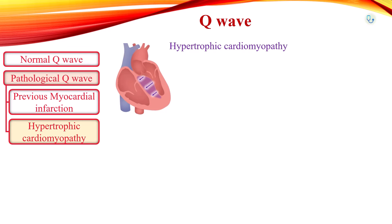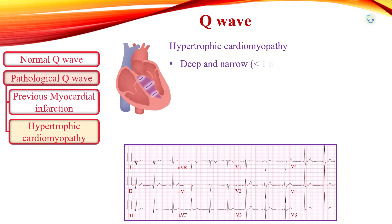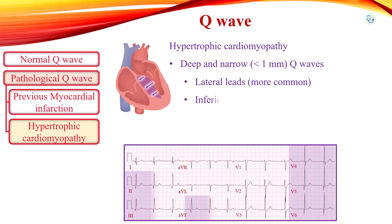In hypertrophic cardiomyopathy, depolarization in the thick interventricular septum produces deep septal Q-waves, which can mimic prior myocardial infarction. However, the morphologies of the Q-waves are different. In prior myocardial infarction, the duration of Q-waves is typically longer than 40 ms, whereas in hypertrophic cardiomyopathy, the duration of the septal Q-wave is shorter than 40 ms.